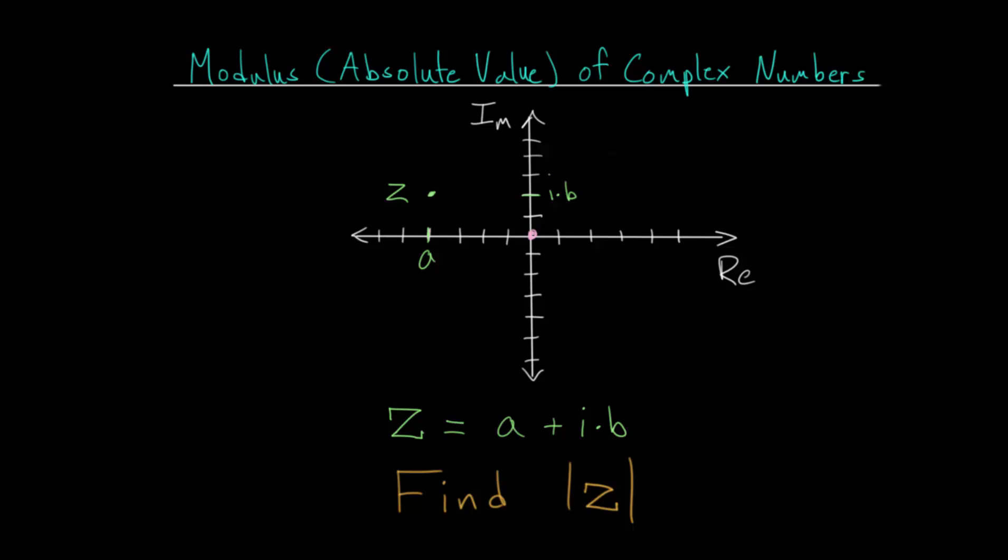We can draw a line from our point to the origin. Essentially, we just need to figure out the length of this line, and we can notate that the length of this line is the absolute value of a plus i times b, or the absolute value of z.